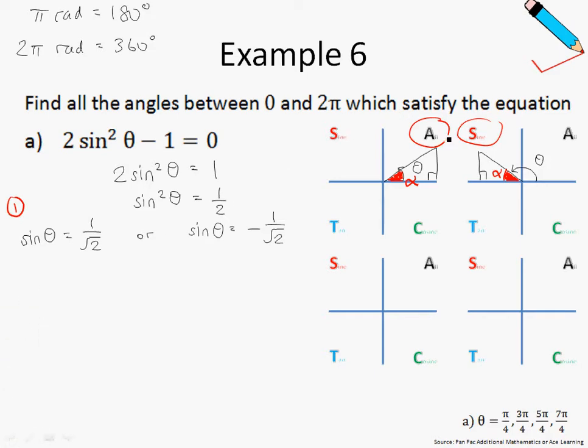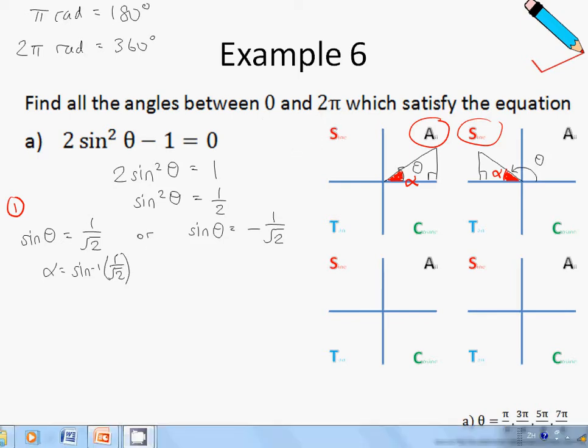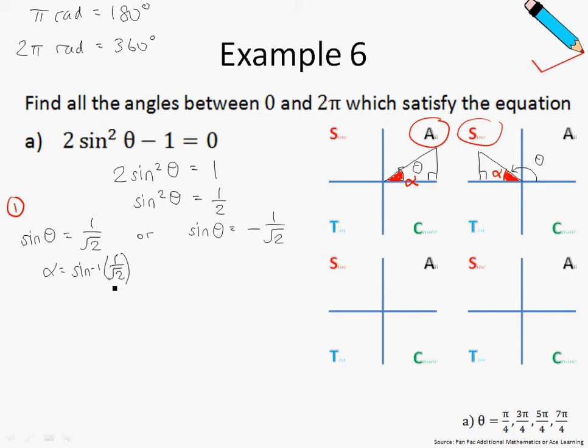So let us work on these two scenarios first. So to find basic angle alpha, we just take sin inverse of 1/√2. And then you can press this in your calculator. And remember, since we are in radian mode now, let us try to give alpha in terms of π. Just ensure that your calculator is in radian mode before you press this into your calculator.